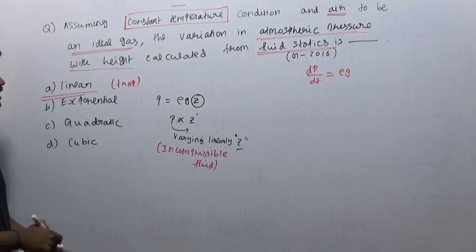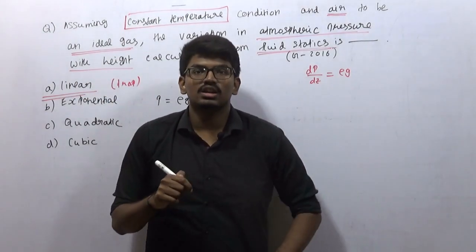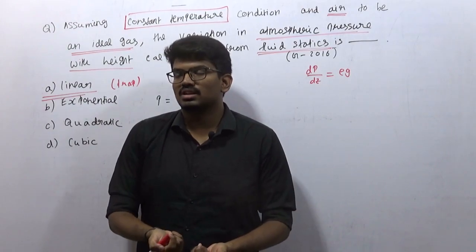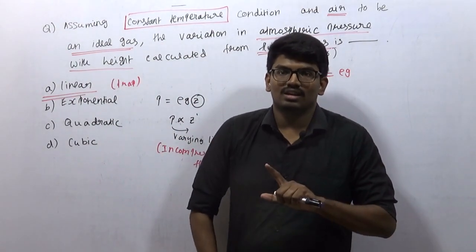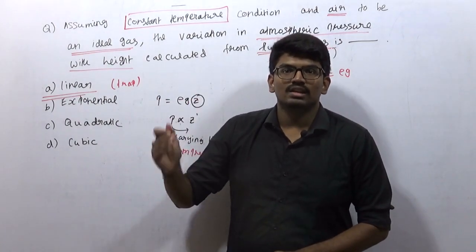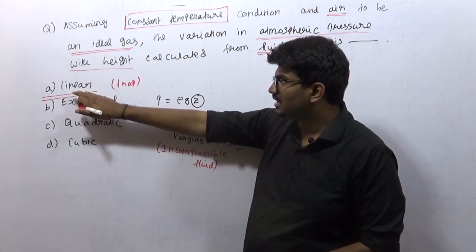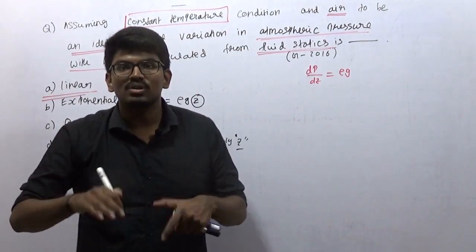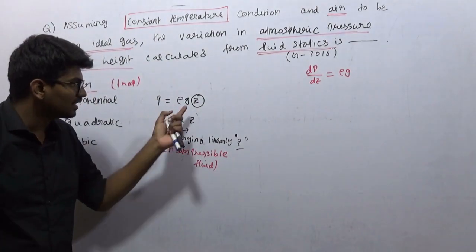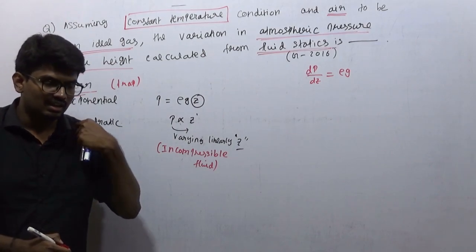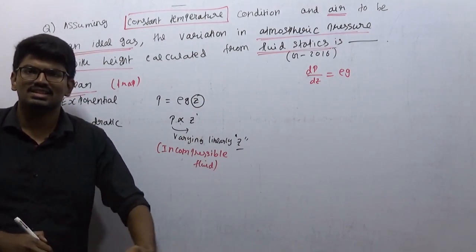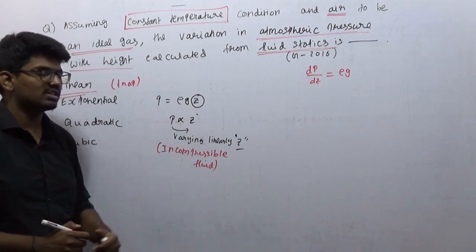In most GATE cases when you are going to choose option A, you need to be very cautious. I am not saying option A is always a trap, but if they want to keep a trap they will keep it in option A. Here option A (linear) is a trap. The most familiar equation P = ρgz is used in almost all chapters — Bernoulli's equation, flow in a pipe, fluid statics and dynamics everywhere — but mostly for liquids.